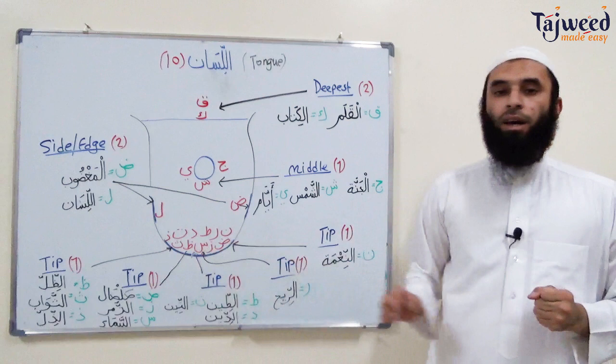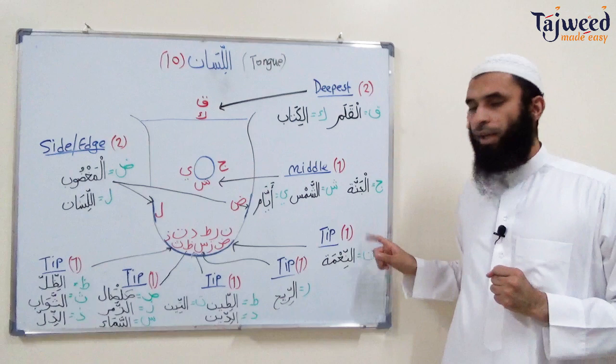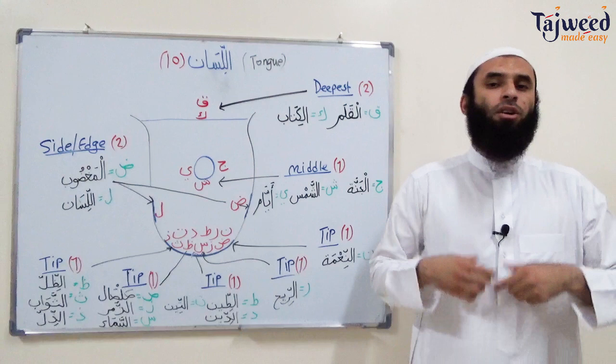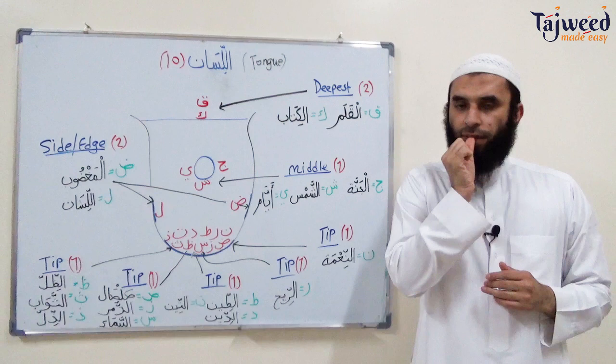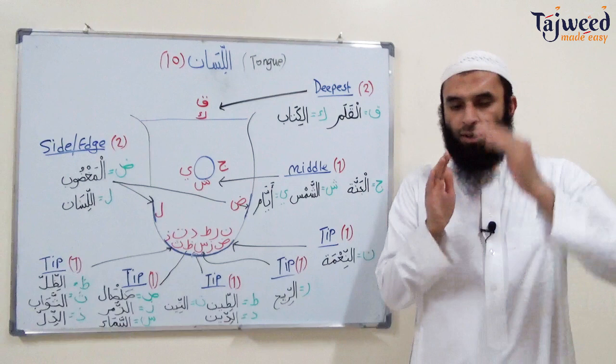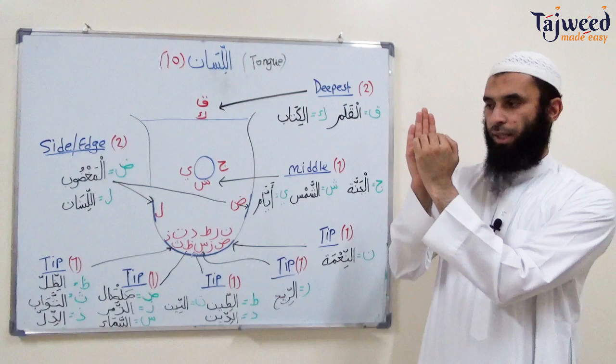Now the tip of the tongue: eleven letters are pronounced here with five different makhraj points. The first letter is Noon, which has its own makhraj. The makhraj point for Noon is the tip of the tongue lying opposite the gums of the front two incisors. An, In, Un — Nima.